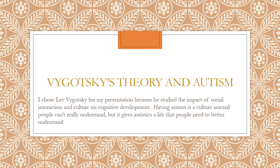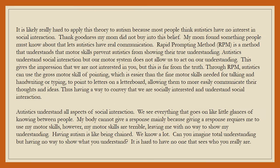Vygotsky's theory and autism. I chose Lev Vygotsky for my presentation because he studied the impact of social interaction and culture on cognitive development. Having autism as a culture normal people can't really understand, but it gives autistics a life that people need to better understand. It is likely really hard to apply this theory to autism because most people think autistics have no interest in social interaction.